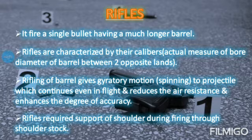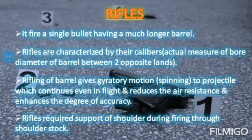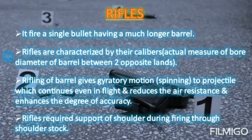Rifling of the barrel gives gyroscopic motion to projectiles, which continues even in flight and reduces air resistance, enhancing the degree of accuracy. When you have rifling in the barrel, it provides gyroscopic motion — meaning the bullet is spinning — and therefore the stability and speed of your projectiles are greatly enhanced.